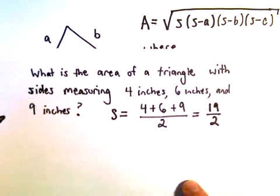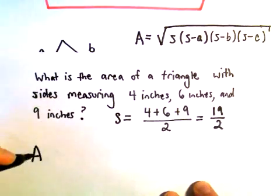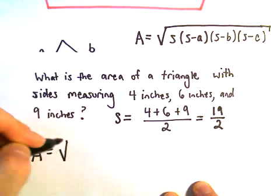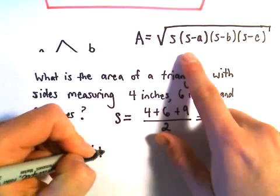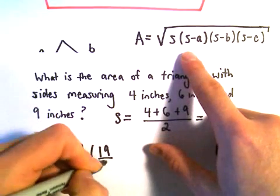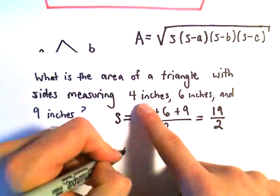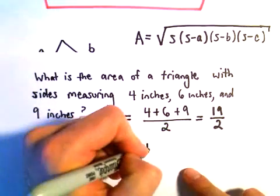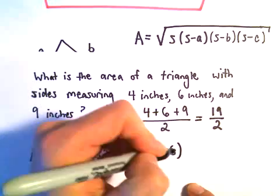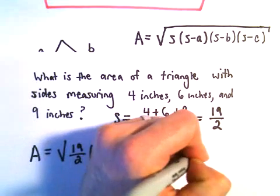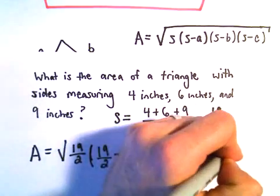And then underneath our square root, so we would basically just have the area equals the square root of 19 over 2. Then we'll take 19 over 2 and subtract away the value for A, which is 4. And then we'll take 19 over 2, subtract away the value 6. And then we'll take 19 over 2 and subtract away the value of C, which is 9.